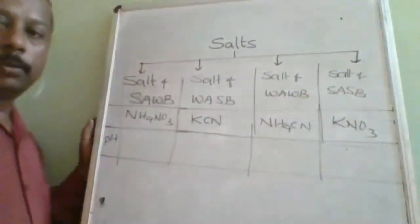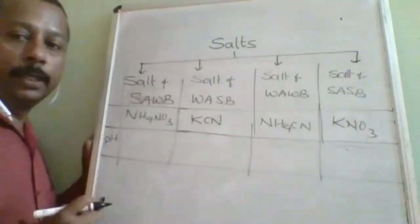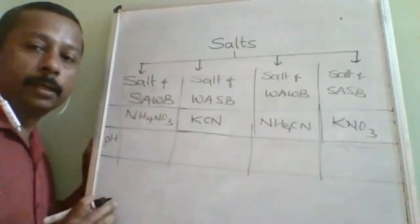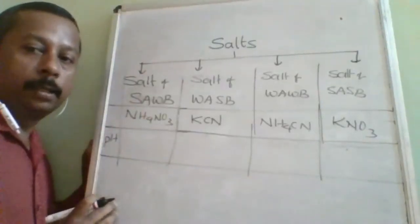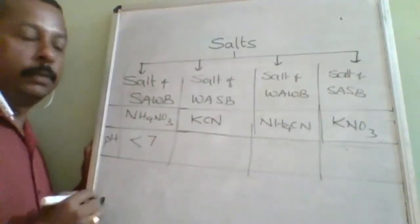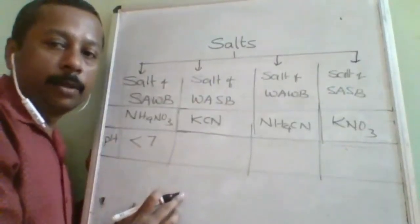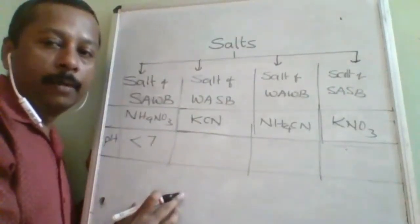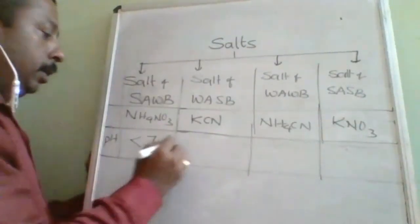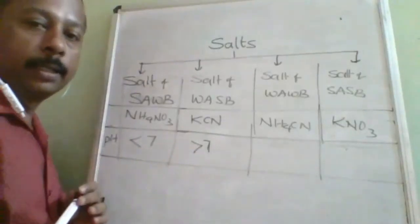For pH values: take NH₄NO₃ (SA+WB) — the acid is strong and base is weak, so the resultant nature is acidic. Therefore pH must be less than 7. For WA+SB, the base is dominating, so pH must be greater than 7.